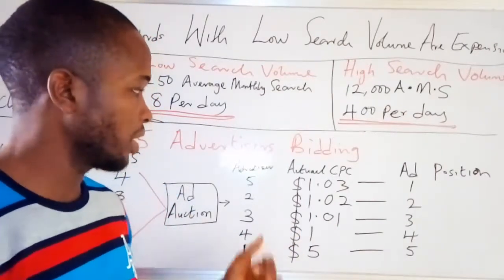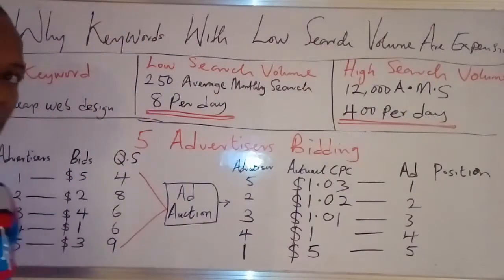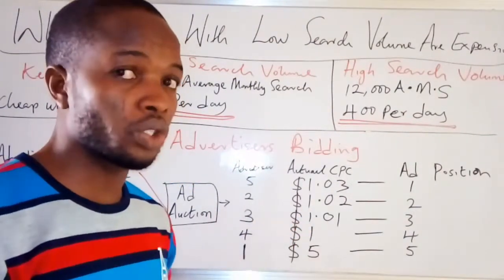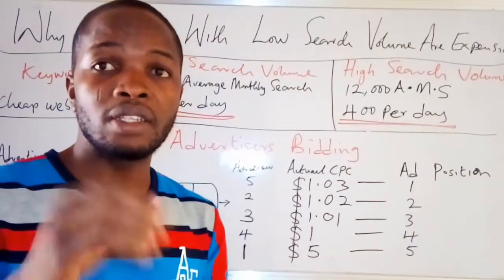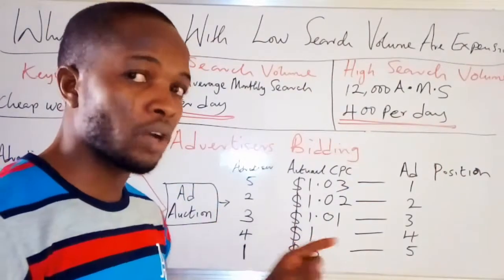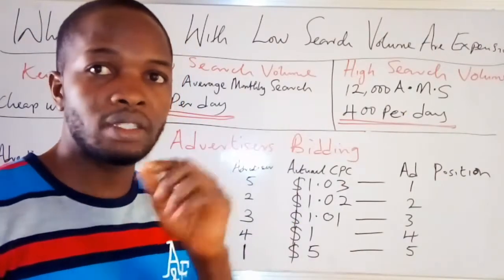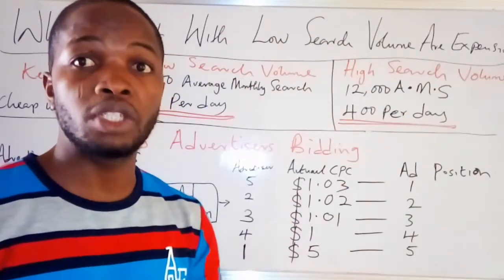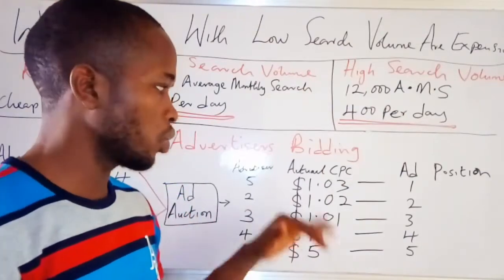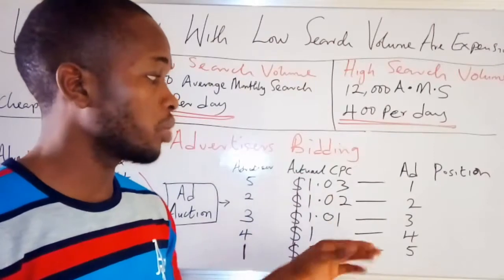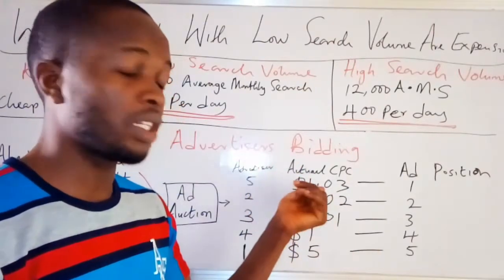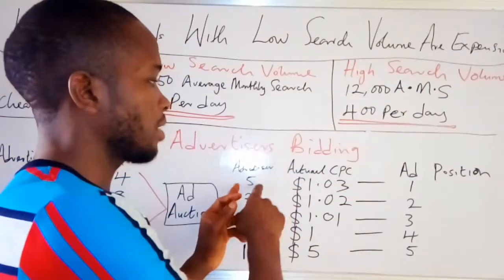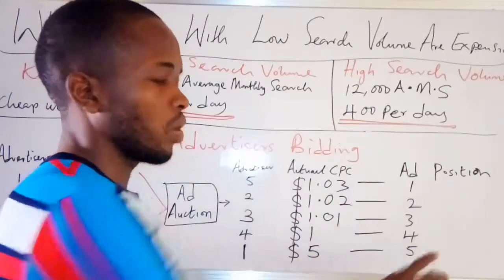Advertiser number three, who bids $4, is not going to pay $4. They pay the minimum amount needed to stay ahead of advertiser number four, which is $1.01. That is the actual amount charged for every click. Similarly, advertiser number two pays a maximum of $1.02, and advertiser number five, who holds the number one position, pays a maximum of $1.03.